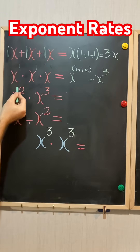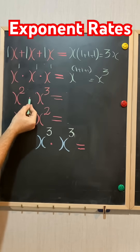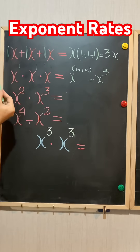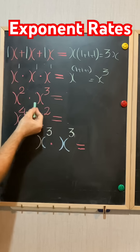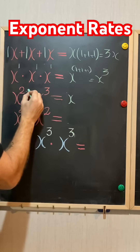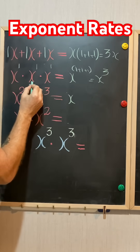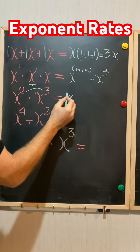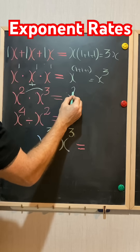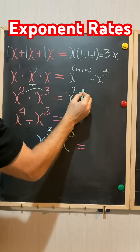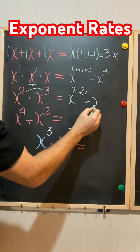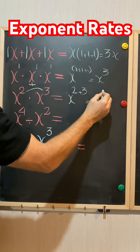x to the power of 2 times x to the power of 3 — again, same base, different exponent. Write the base and add the exponents. It's gonna be x to the power of 2 plus 3, equals x to the power of 5.